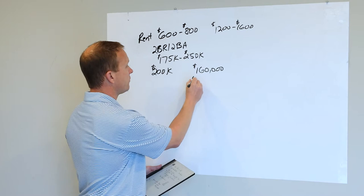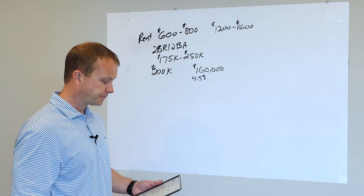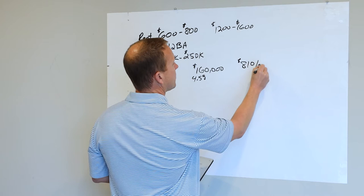Again, that may vary depending on the time that you're watching this video. But if you do all that, you're looking at basically about $810 per month in principal and interest. Then you've got to add taxes and insurance to that as well.